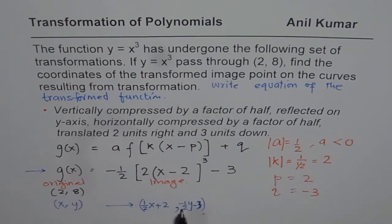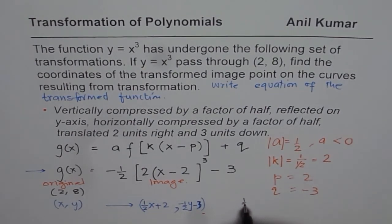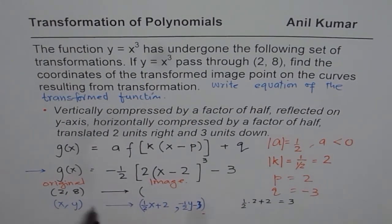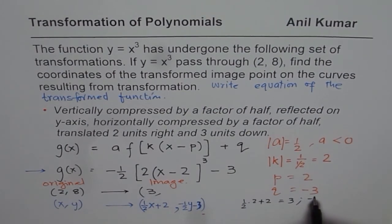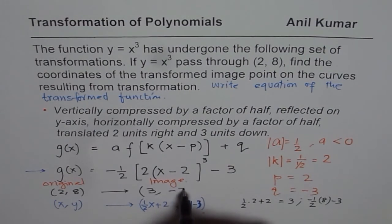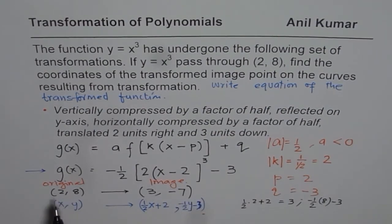For the given equation, you could have done directly also. So if I substitute x as 2, what do I get? It is half times 2 plus 2 and that equals 1 plus 2 as 3. So as far as the x value is concerned, it will be half of 2, which is 1 plus 2, which is 3. Now with the y values, we have to do minus half of y value, which is 8, and then take away 3. Now half of 8 is 4, minus 4 minus 3 gives you minus 7. So the coordinate points will change from (2, 8) to (3, -7).